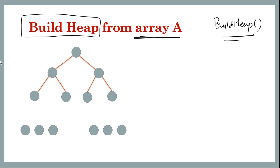Assuming you know that a binary heap is represented as an array, we have all these numbers already stored in some array A. The binary heap is a complete binary tree — only the last level can be incomplete, and all other levels should be complete. Let's take a general case where we have exactly a complete last level.